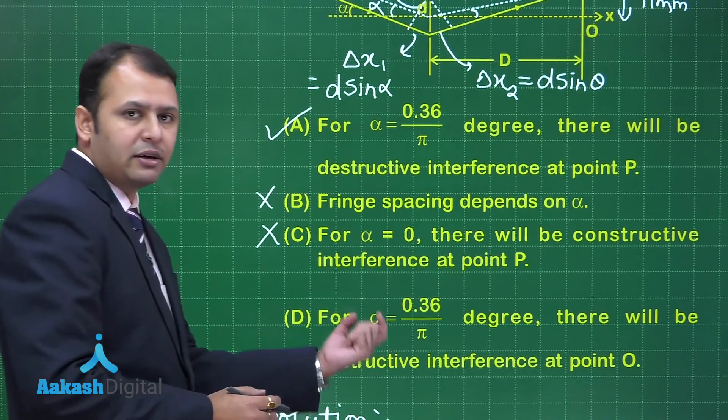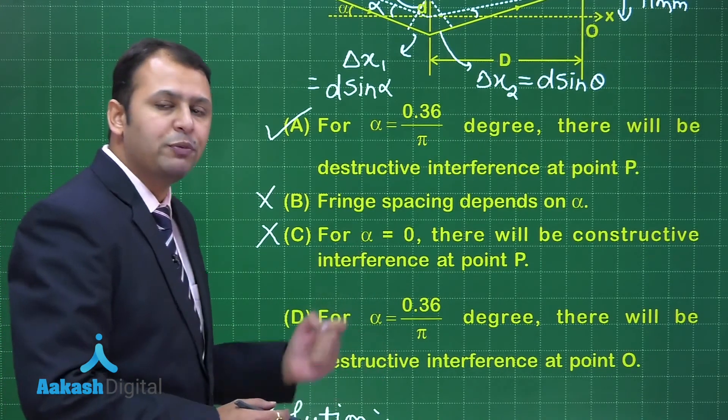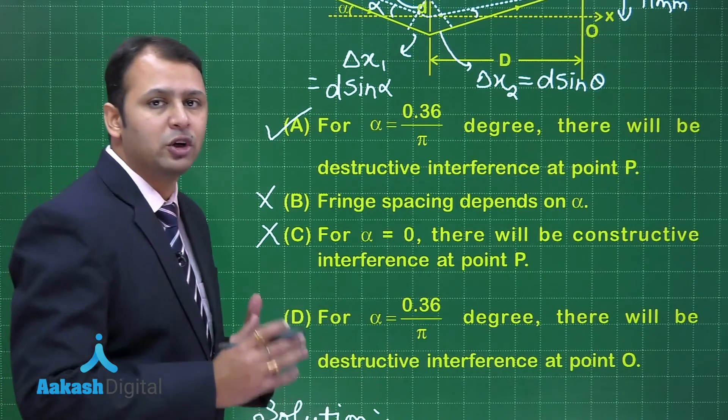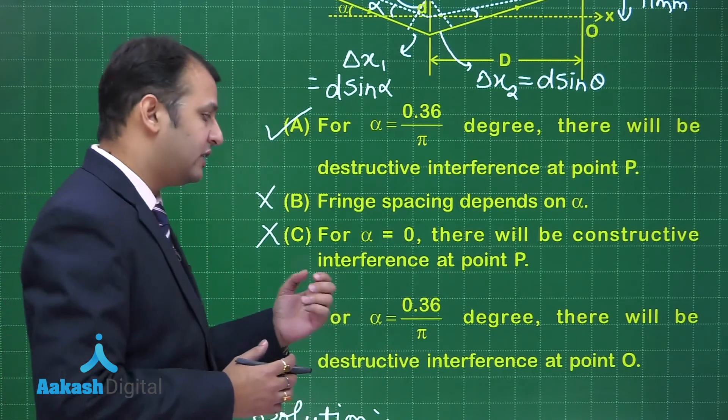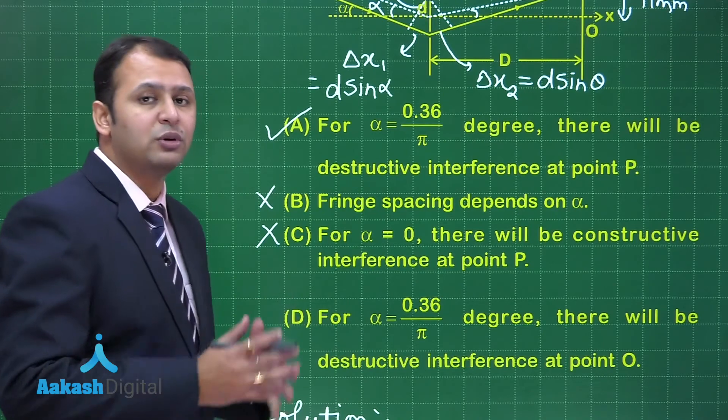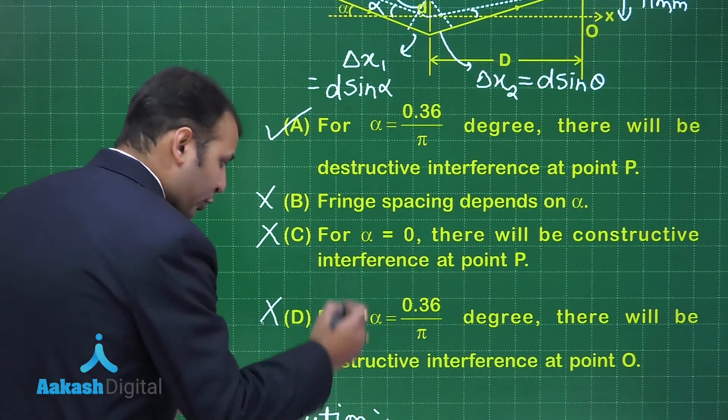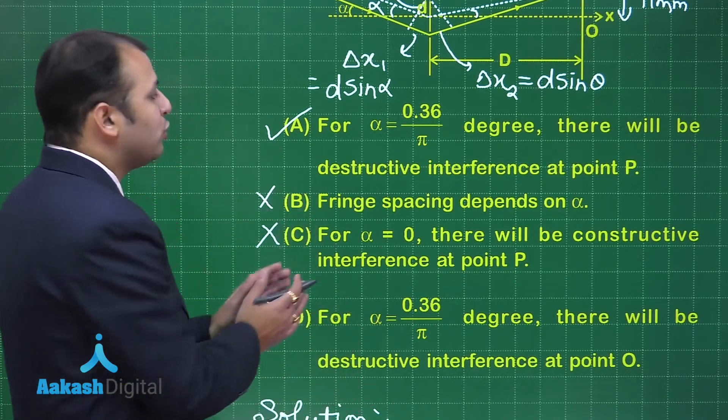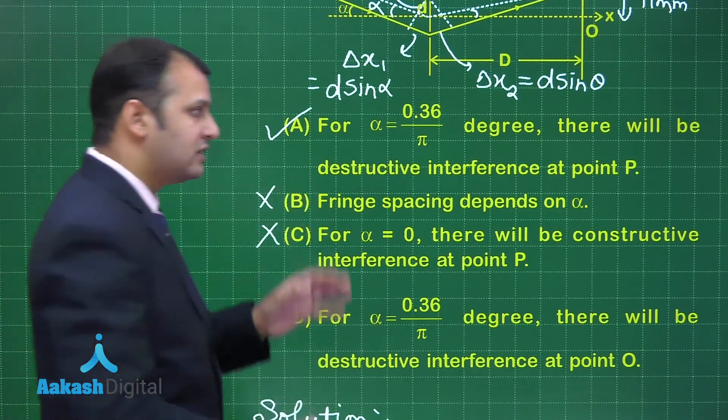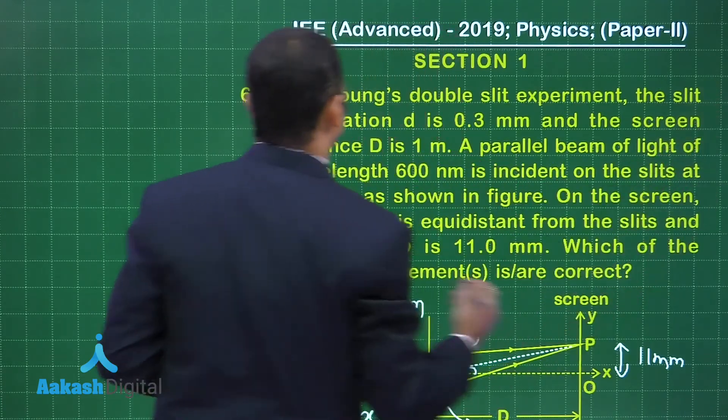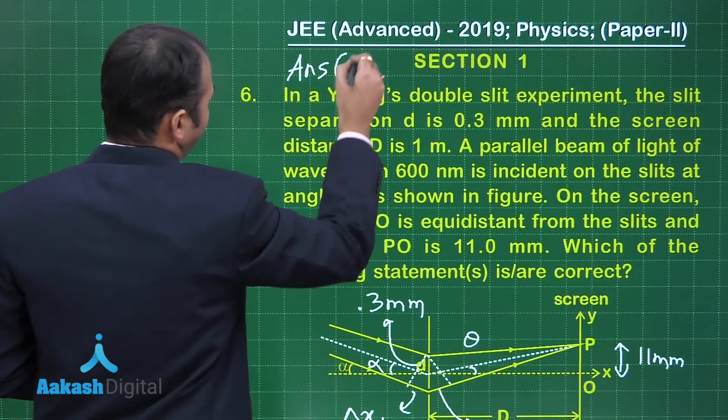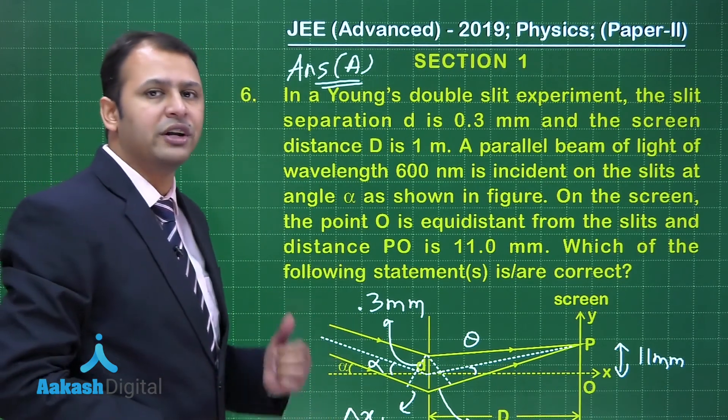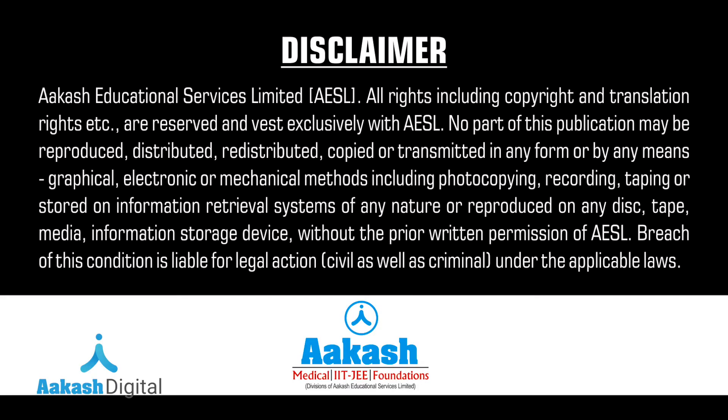Now let's talk about D. For this alpha, the path difference at O would be equal to 1 lambda. As we have already calculated, it is 6 into 10 to the power minus 7 meters. Under that condition, it will lead to formation of constructive interference. At point O, for such condition, destructive interference will not happen. Among the four options, only option A is correct. The right answer for this question would be option A. I hope you have understood the question very well. Now let's move on to our next question. Thank you.